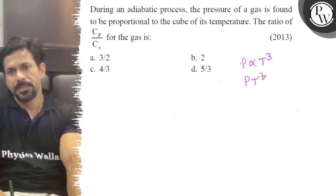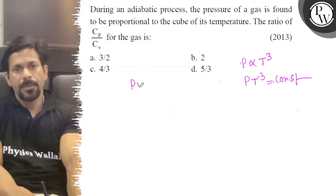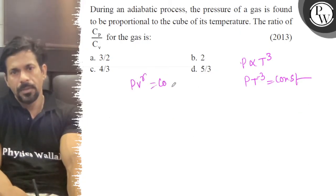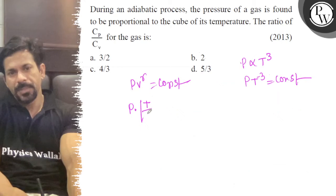So, P T to the power minus 3 is equal to a constant. We know that P V to the power gamma is constant. Now, I will write the formula in P T. So, P T is equal to T by P to the power gamma is equal to constant.